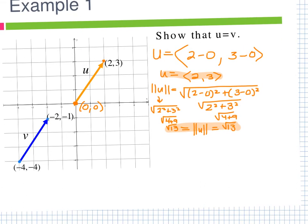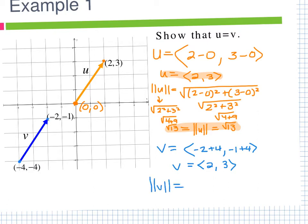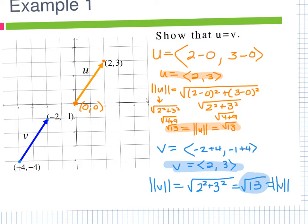Now for vector v: the component form is terminal x minus initial x = −2 − (−4) = 2, and terminal y minus initial y = −1 − (−4) = 3, giving ⟨2, 3⟩. Then the magnitude of v is √(2² + 3²) = √13. Because the component forms and magnitudes match, u and v are equivalent. If the question had asked 'are they equivalent,' you'd answer yes or no; here we're showing it.